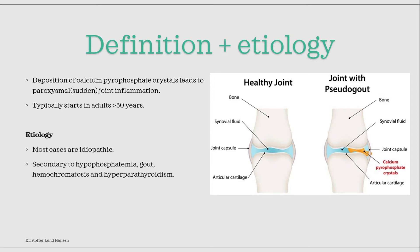Most cases are idiopathic — as in, we have no clue why it happens — but in the minority of cases there is a clear underlying cause. These causes can be hypophosphatemia, hyperparathyroidism, hemochromatosis, or gout.